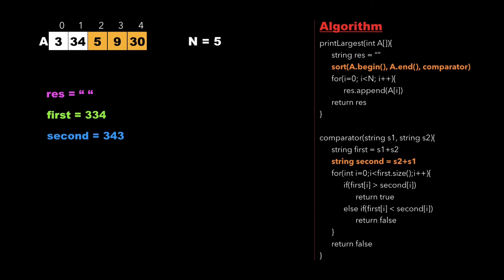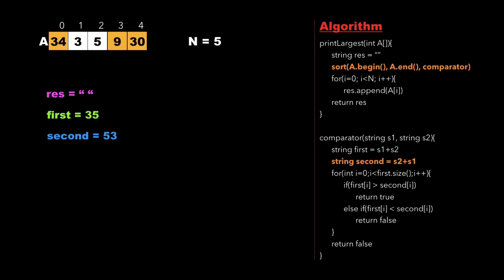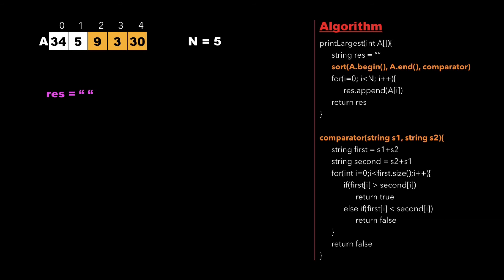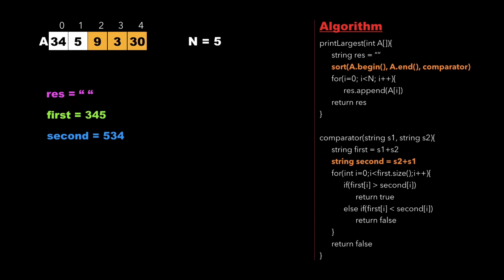We start again from the beginning of the array where we have 3 and 34, with first as 334 and second as 343. Since 343 is greater than 334, second is greater than first, so we swap 3 and 34. Then first is 35 and second is 53, so we return false and swap 3 and 5. We keep on doing this until we get the maximum number at the beginning of the array, which is 9.